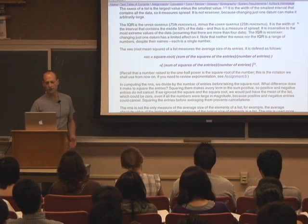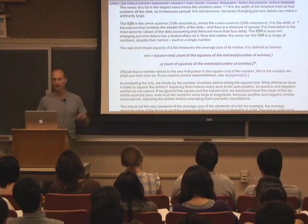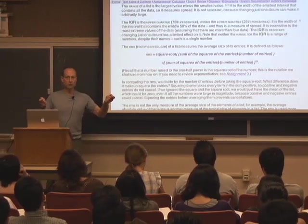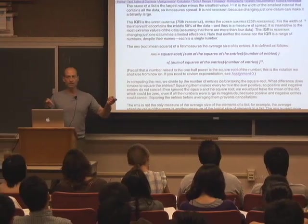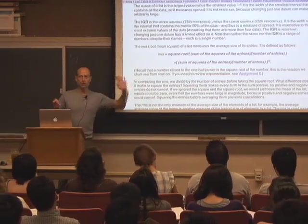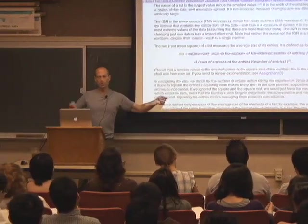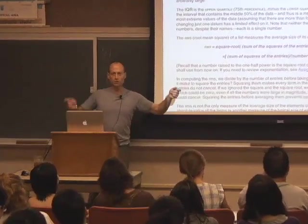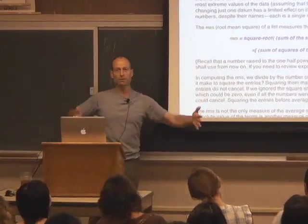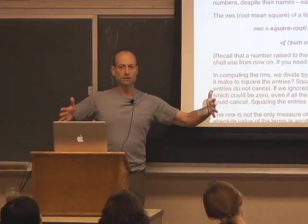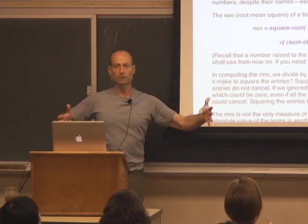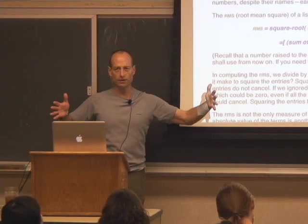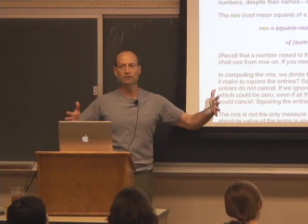The interquartile range (IQR) is the 75th percentile minus the 25th percentile — the width of an interval that captures the middle 50% of the data. With the upper quartile, 25% of the data are above it; with the lower quartile, 25% are below it. The IQR is the upper quartile minus the lower quartile.